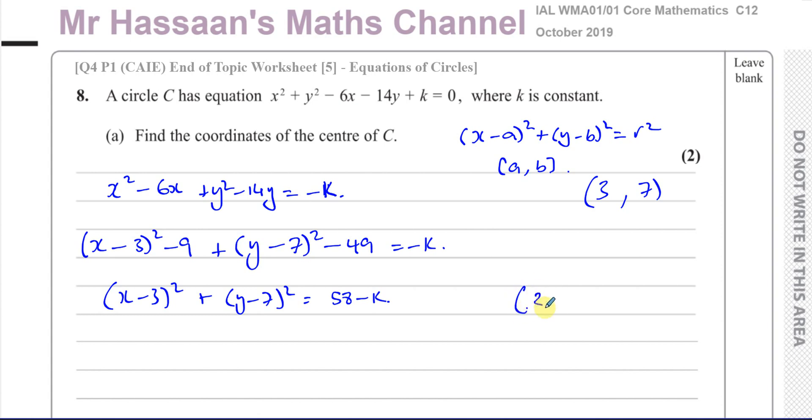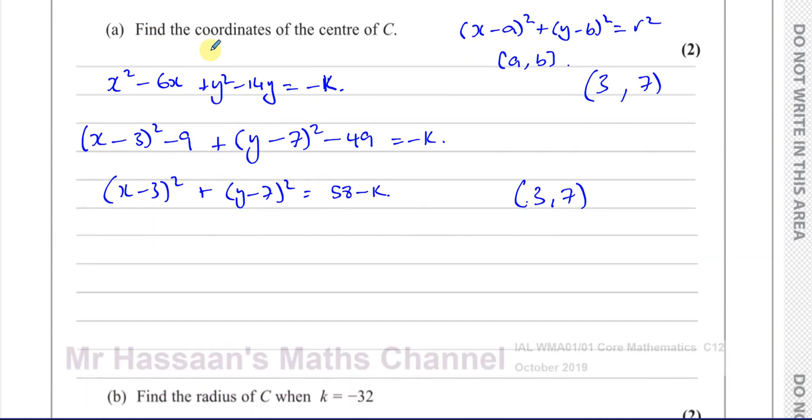As I mentioned first, the center is going to be (3, 7). So there's the answer to part A. Find the coordinates of the center of C, and we've done that.